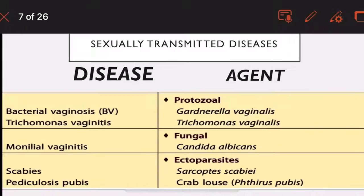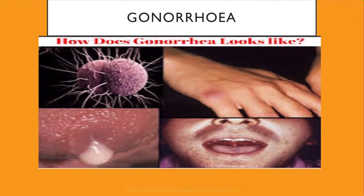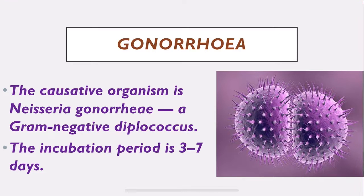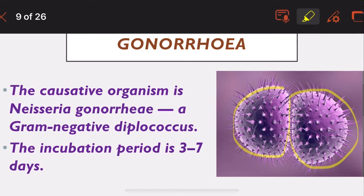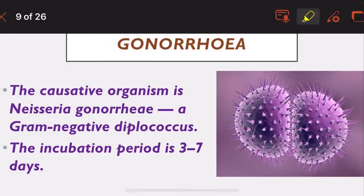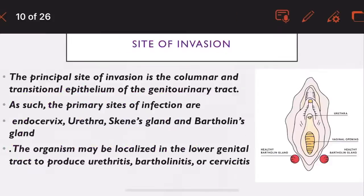Now we move on to gonorrhea in detail. The causative organism is Neisseria gonorrhoeae, which is a gram-negative diplococcus. The incubation period is three to seven days. As seen in the image, it appears as double diplococci and is a gram-negative bacteria - the most important organism to remember here.